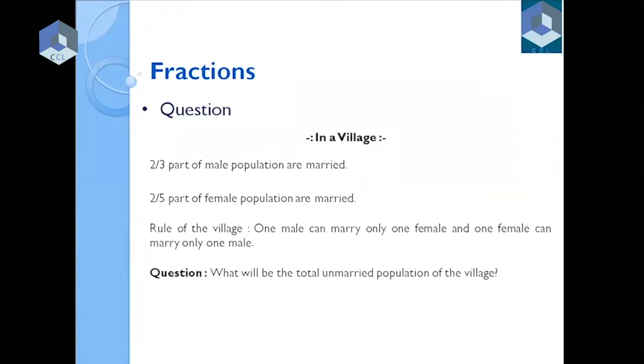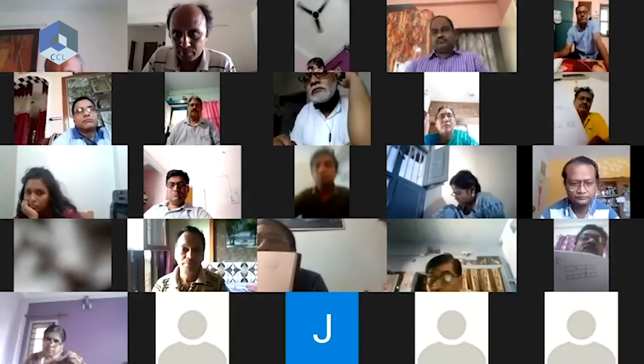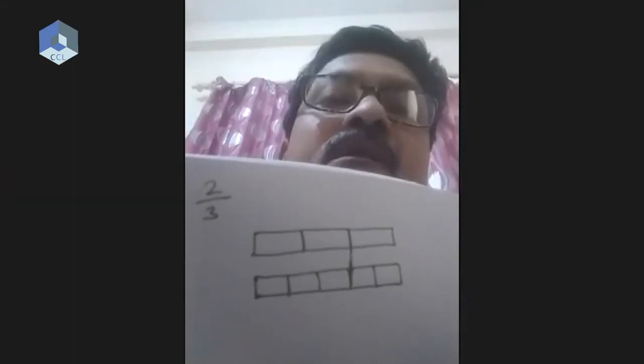You have to solve this problem by drawing something on paper. This is what I am showing. One-third of the male population will remain unmarried and two-fifths of the female population will remain unmarried.